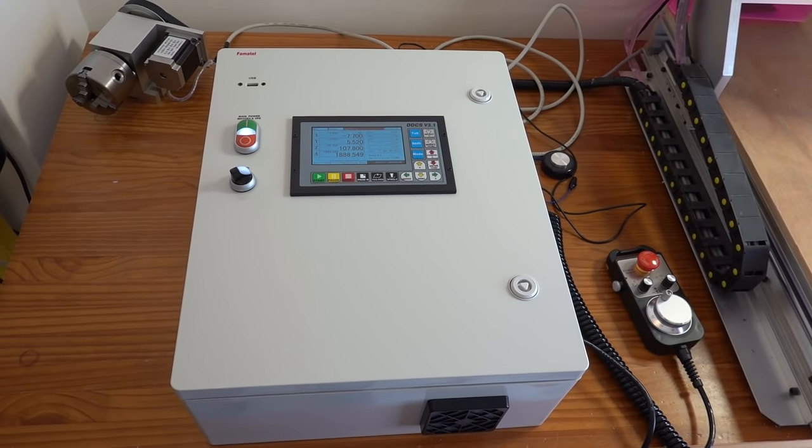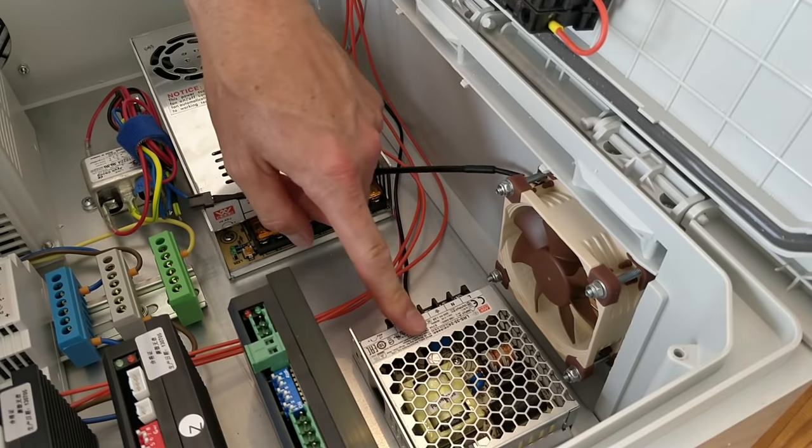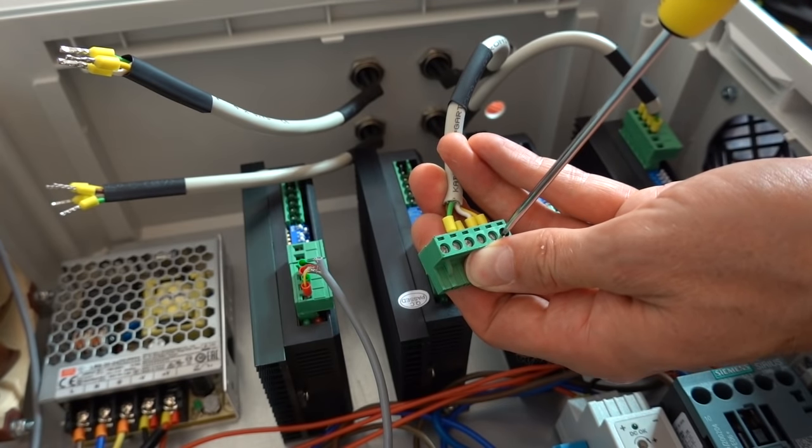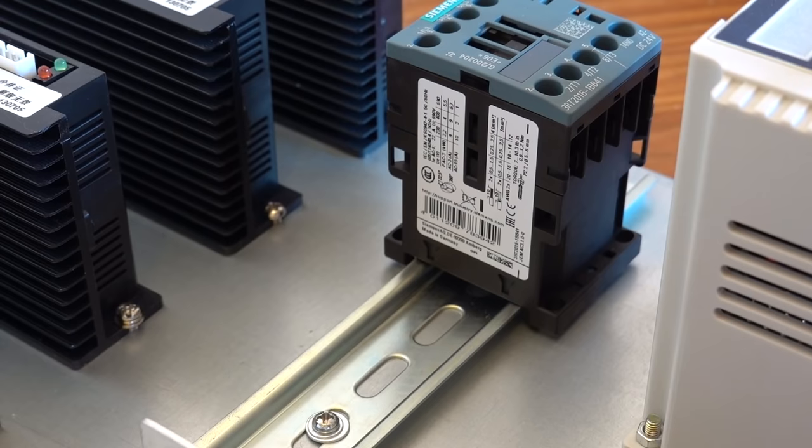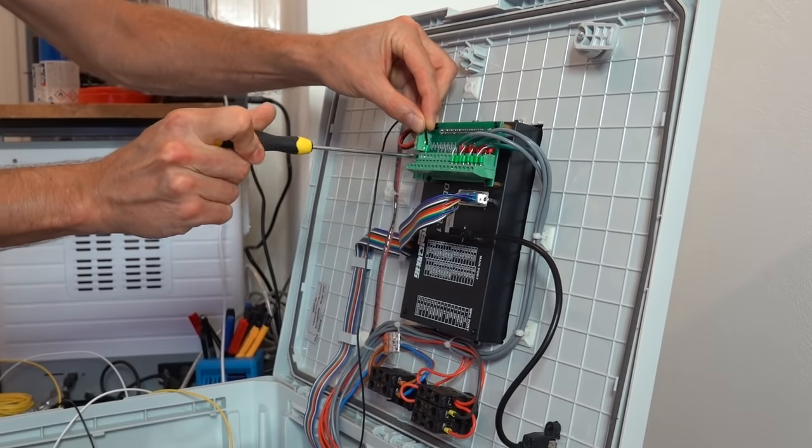Hi, this is part 2 of a build series for a new offline controller for my 6040 CNC router. If you haven't done so already, I would recommend that you watch part 1 first, since this build is mostly in chronological order, and in part 1 you can see how we got to the point where we are now. So let's continue the assembly process.